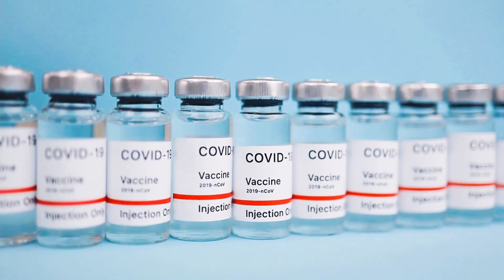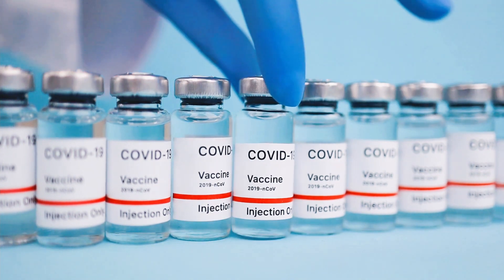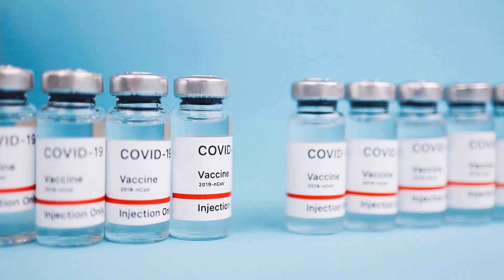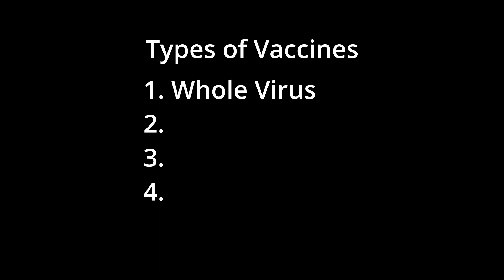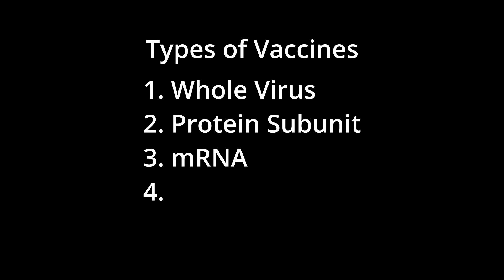COVID-19 vaccines have different types. Each and every one of them function in different ways. This section will cover four types of vaccines: whole virus, protein subunit, mRNA, and viral vector vaccines.